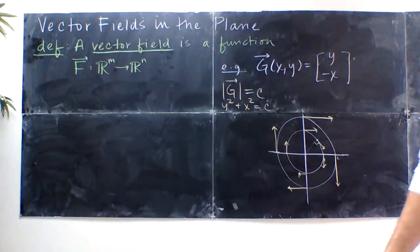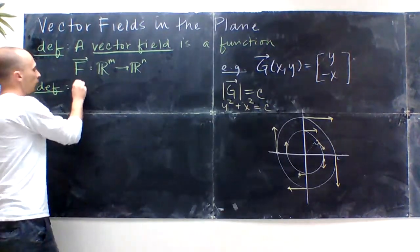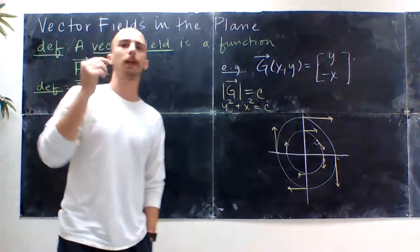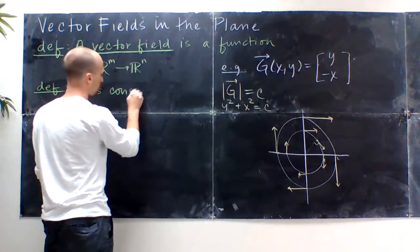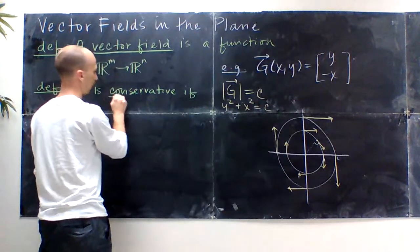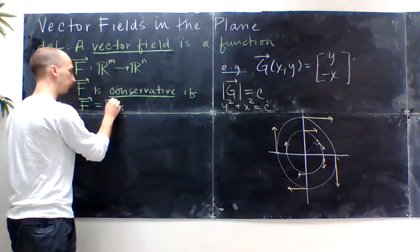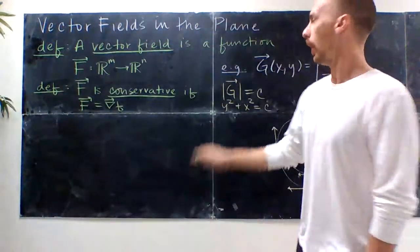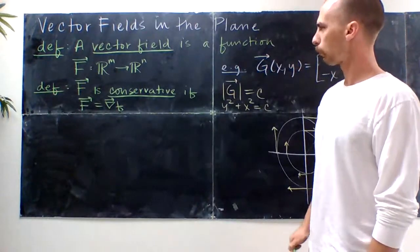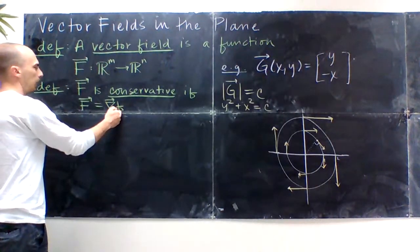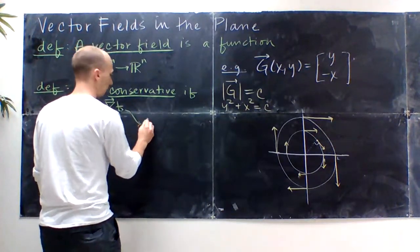The definition of a conservative vector field: vector field F is conservative if it can be expressed as the gradient of some other real-valued function. We say F is conservative if F equals the gradient of some other function. We call that lowercase f the potential function, and it takes R^m into R.